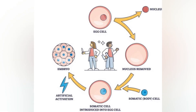However, in sponges, non-differentiated somatic cells form the germline, and in some areas, differentiated somatic cells are the source of the germline. Mitotic cell division is only seen in diploid somatic cells, and only some cells like germ cells take part in reproduction.